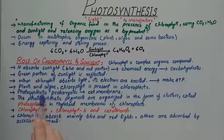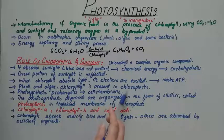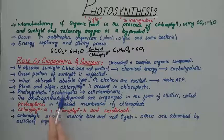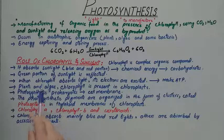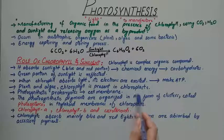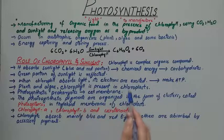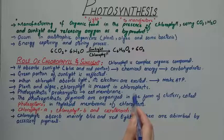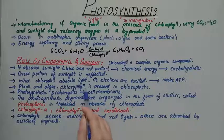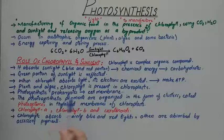In plants and algae, chlorophyll is present in the chloroplast, while in photosynthetic prokaryotes it is present in the cell membrane. Plants and algae have a specialized sac-like structure known as the chloroplast. Inside the chloroplast, chlorophyll is present in the thylakoid or granum region, where photosynthesis takes place. In prokaryotes, it is present in the cell membrane.